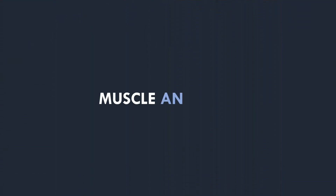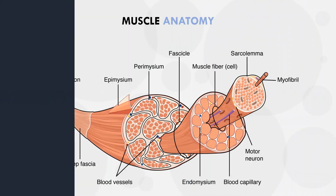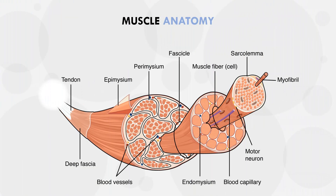To answer this question, we first need to understand the basic anatomy of a muscle. Each muscle is essentially a big bundle of contractile tissue with various different layers. The smallest unit of contractile tissue is what we call a myofibril, which can be thought of as a spaghetti-like structure running along the length of the muscle fibre. A bunch of myofibrils makes a muscle fibre, a bunch of muscle fibres makes a fascicle, and a bunch of fascicles makes the overall muscle belly.